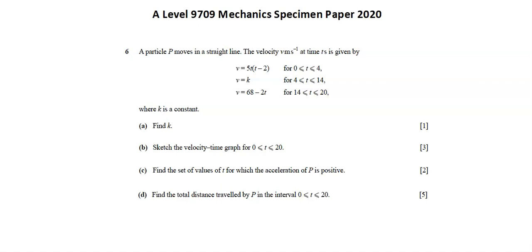Hi, I'm teacher Thomas. Welcome to A-Level Mechanics. We're looking at the 2020 specimen paper for mechanics, question 6. A particle P moves in a straight line. The velocity v meters per second at time t seconds is given by three different functions and three different intervals, where k is a constant.